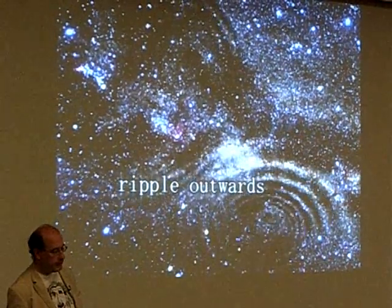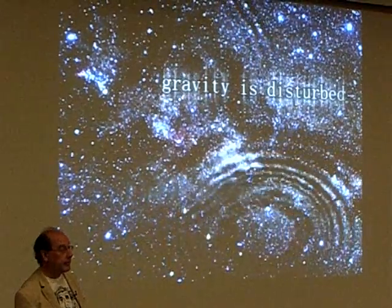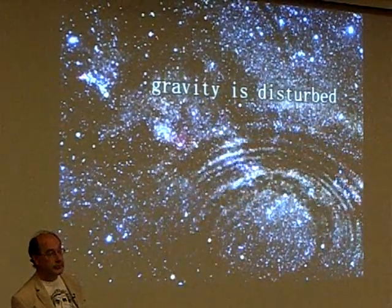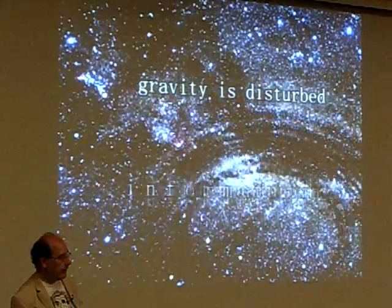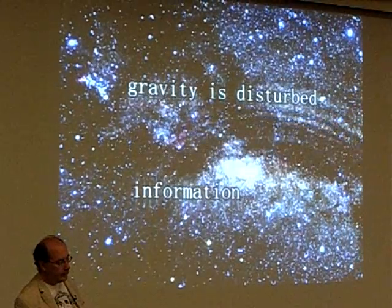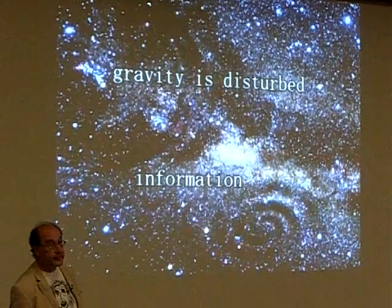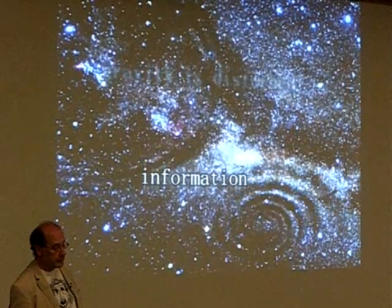According to Einstein, anything that changes gravity causes gravitational waves to ripple outward. In the same way that ordinary sound is produced when air is disturbed, gravitational waves are produced when gravity is disturbed.